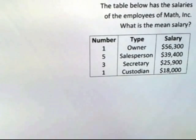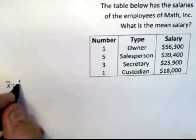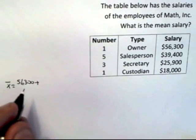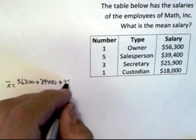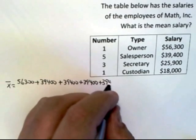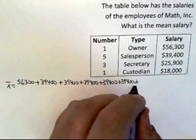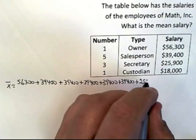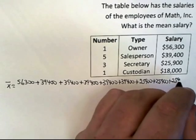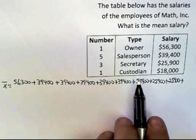We're going to be dividing by ten. I wouldn't actually recommend doing this by hand, but if you did, you would have X-bar equals 56,300 — that's the owner — then 39,400 five times for the salespeople, then 25,900 three times for the secretaries, and then last but not least, 18,000 for the one custodian.